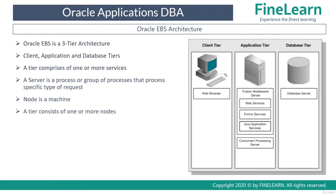As we have seen in the previous lesson, Oracle E-Business Suite is basically a 3-tier architecture which has the client tier, application tier, and the database tier. We have already seen the definitions of what is a tier, server, and node, and we have understood the different topologies or deployments of E-Business Suite in real time.